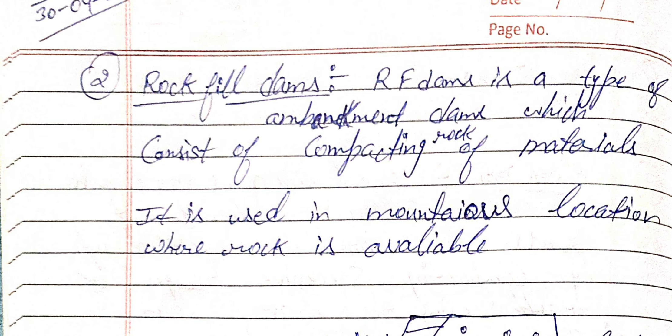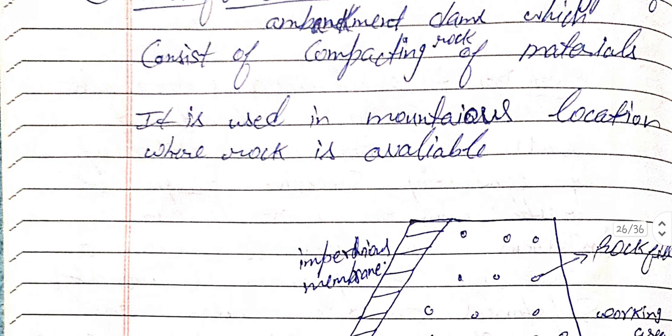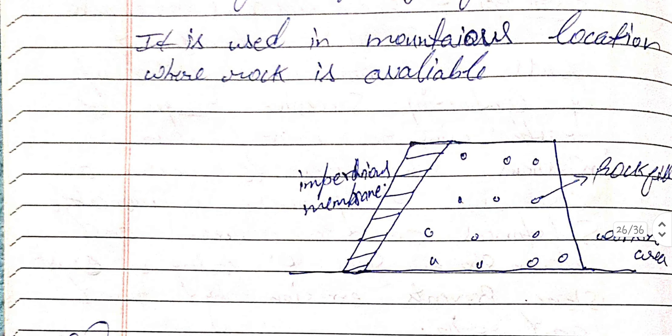Next is the rock-fill dam. The rock-fill dam is a type of embankment dam which consists of compacted rock materials. It is used in mountainous locations where rock is available. The diagram shows the membrane, dotted areas representing rock fill, and the working area included in this dam.